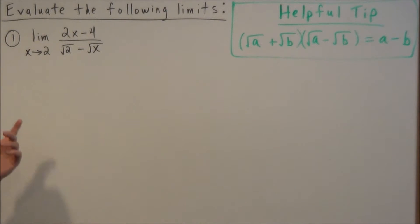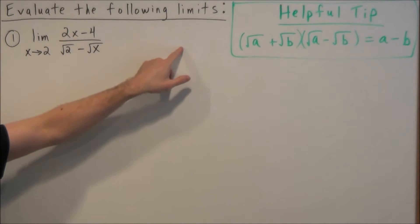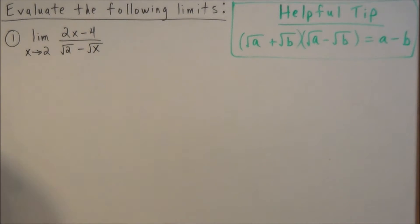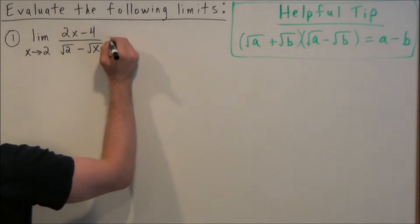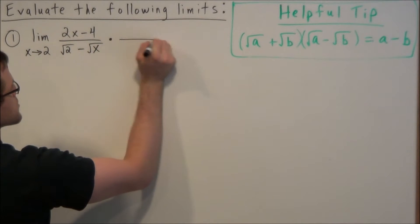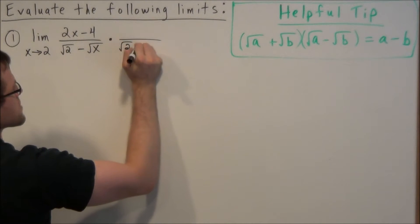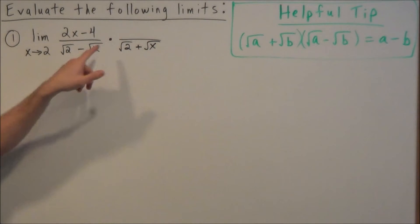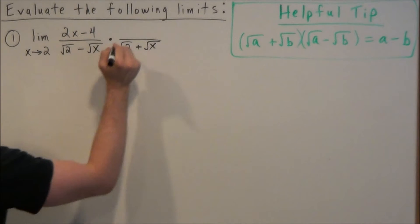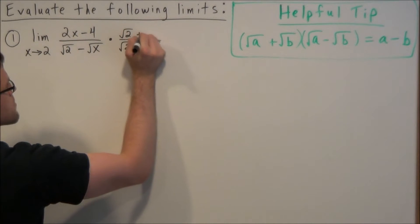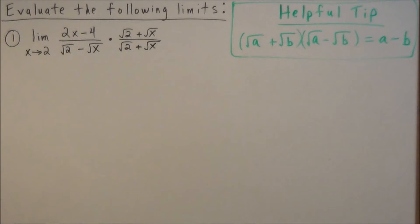Now your first line of attack with limits is to plug in. But if we plug in 2, notice we're going to get 0 over 0, which is indeterminate, so we have to rearrange this algebraically. So what we want to do is we're going to multiply by the conjugate of radical 2 minus radical x. And just a tip, when you're doing these, some students might try to multiply by the conjugate of 2x minus 4, but most of the time you're going to have to multiply by the conjugate of the term involving the radical.